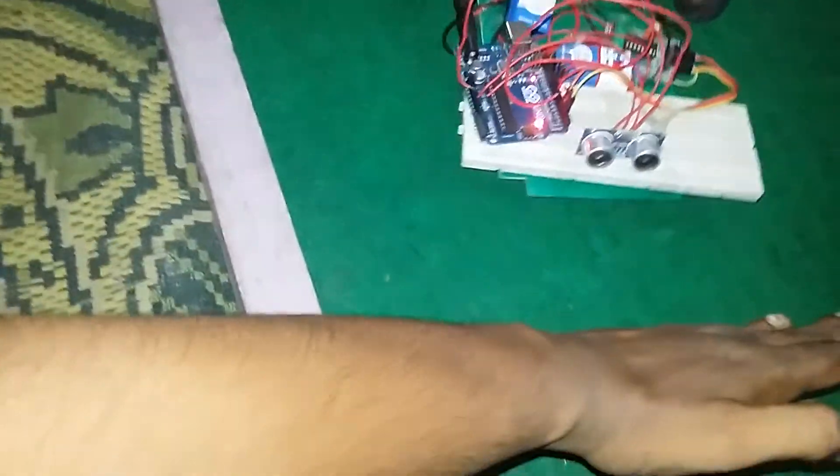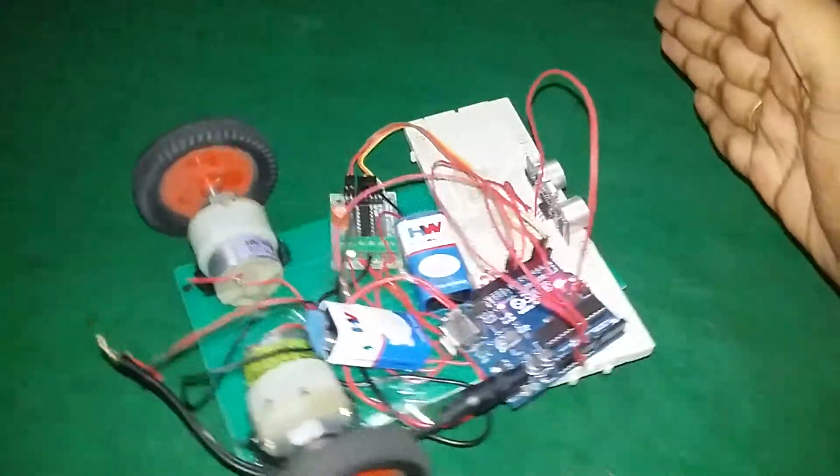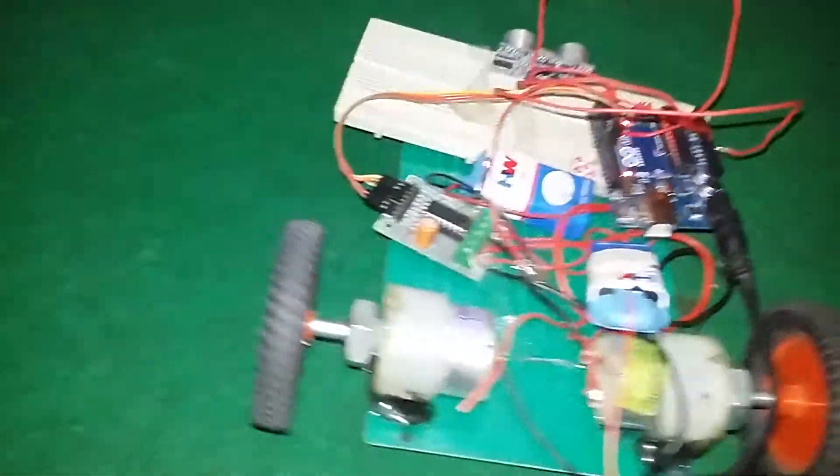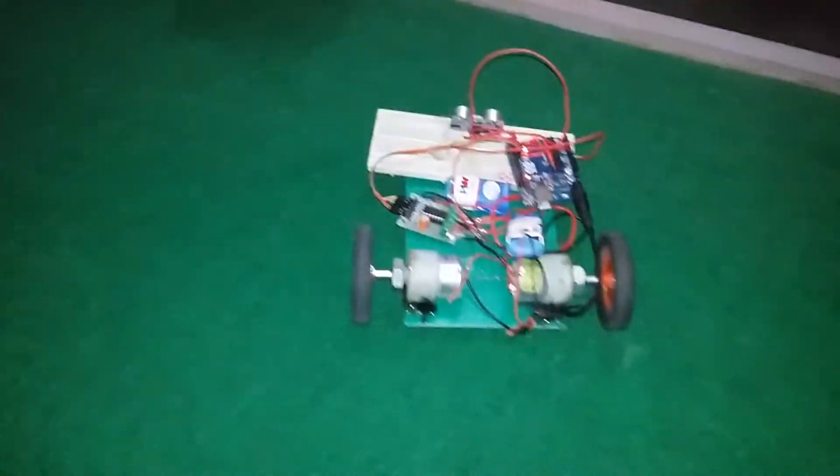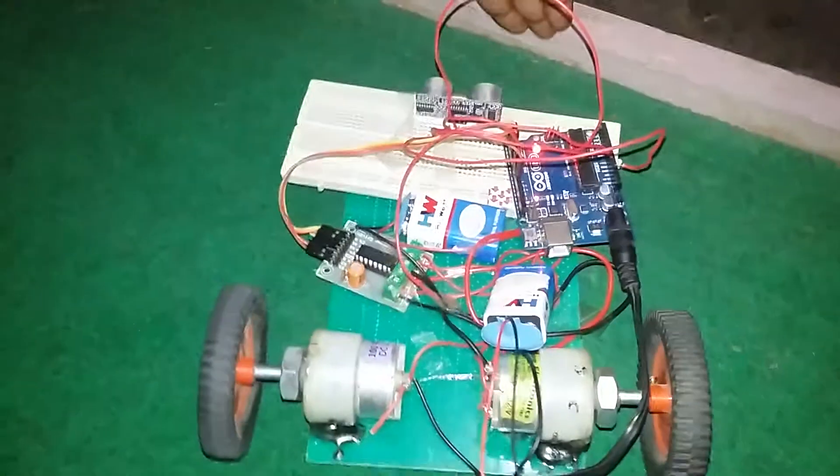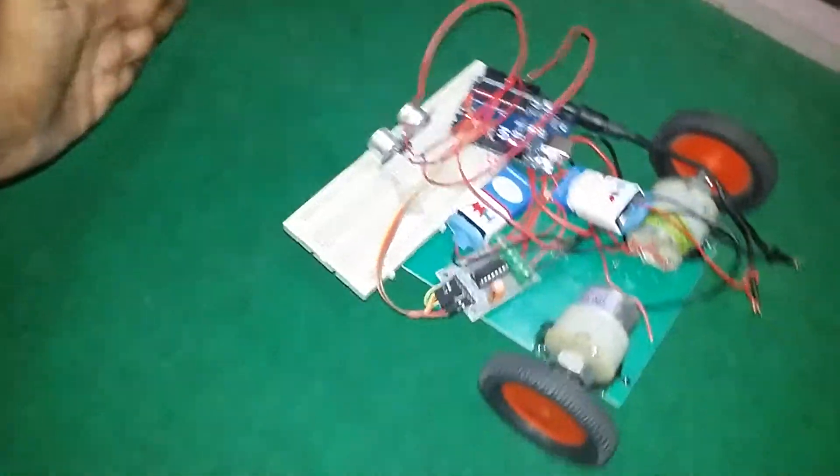Hello, good morning everybody. I am showing the demonstration of an Arduino-based obstacle avoiding robot. I have used here an Arduino board, ultrasonic sensor SR04, motor driver IC LM293, a pair of motors in the back, freewheel in front, and batteries.